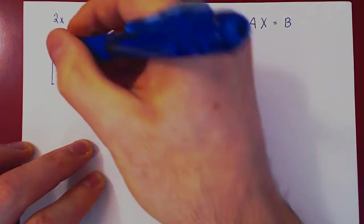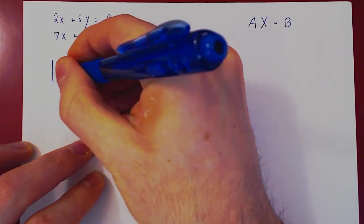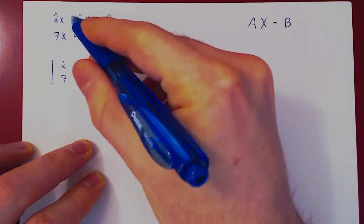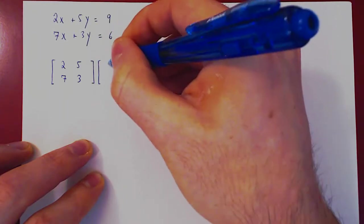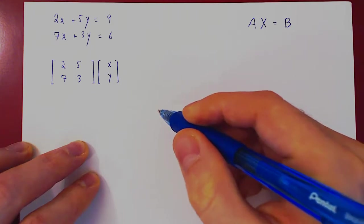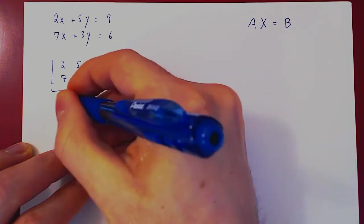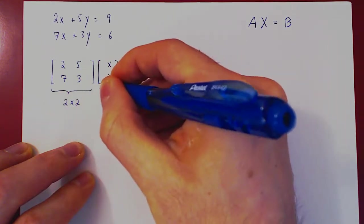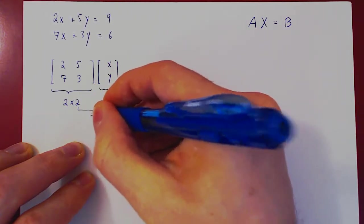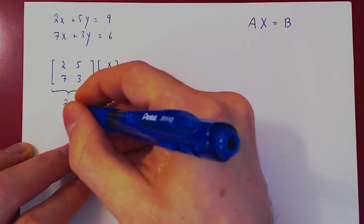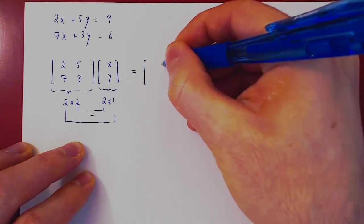Well, the first row, 2, 5, the second row, 7, 3, times a column, and the entries of course would have to be X and Y. Okay, so let's see if that's our A and our uppercase X. Here, this matrix is a 2 by 2 matrix. This matrix is a 2 by 1 matrix, so multiplication is defined as 2 equals 2. And the result will be a matrix that is also a 2 by 1 matrix. So a single column with two entries.